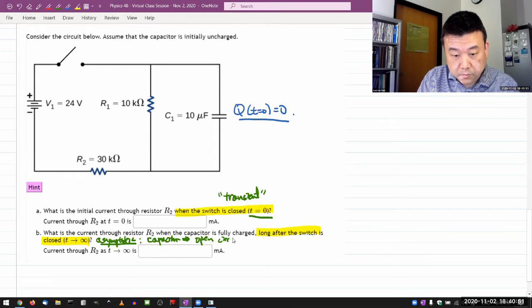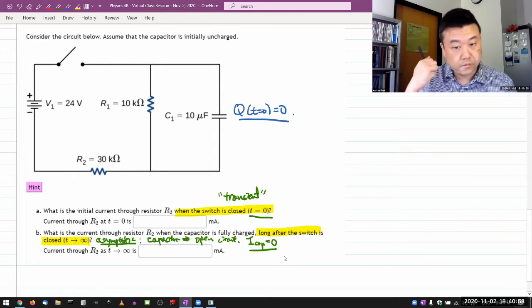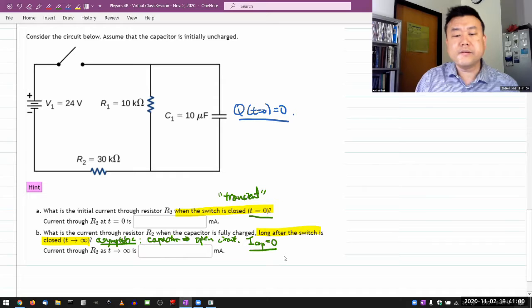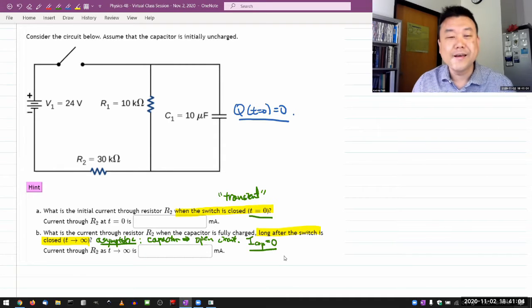And in more practical terms, what that means is current through the capacitor is equal to zero. And we'll do that. And for now, we'll talk, so, so we'll get to that in a couple minutes.